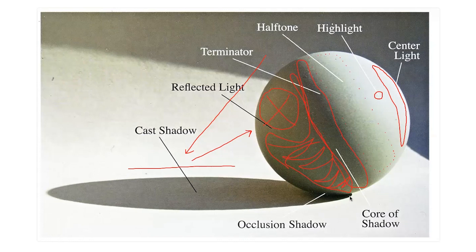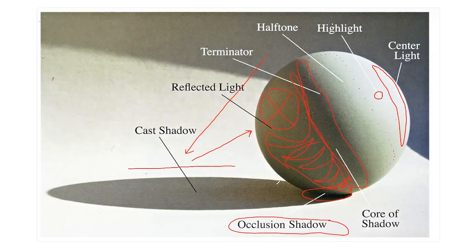Then we have the darkest value when looking at an illuminated object, which is called the occlusion shadow. We can see it's pointing to this really dark spot where the form meets the plane that it's sitting on. That basically tells us where there is absolutely zero light describing that area of space — the absence of light, which is going to be black or a really, really dark color. And then last but not least, we have the cast shadow. This is the shadow created by the light source on the plane or the surrounding environment where the object or subject is sitting.